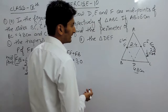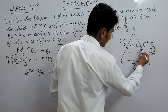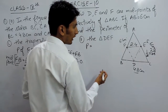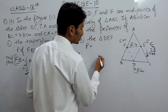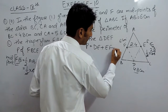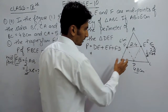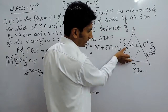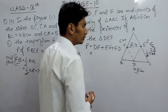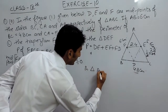Now we need to find the perimeter of triangle DEF. To find the perimeter of triangle DEF, we add all its sides: DE + EF + FD. We already know EF = 2.4 cm. We now need to find FD and ED using the midpoint theorem in triangle ABC.